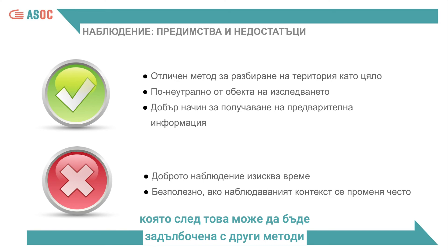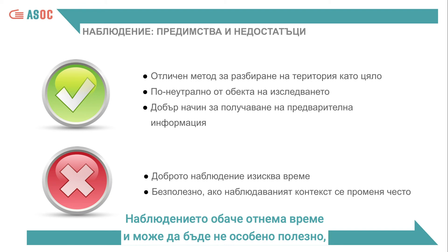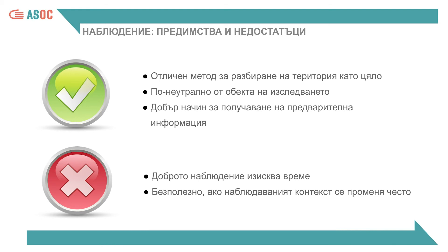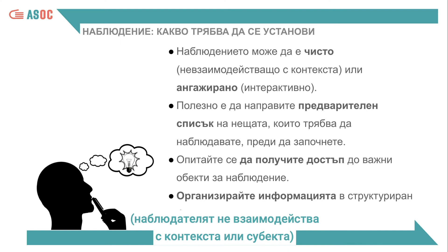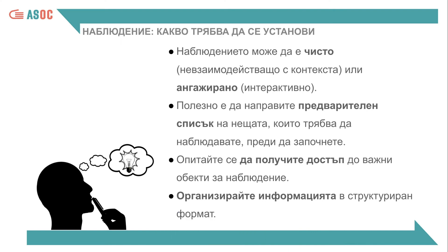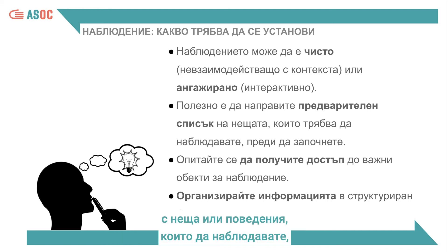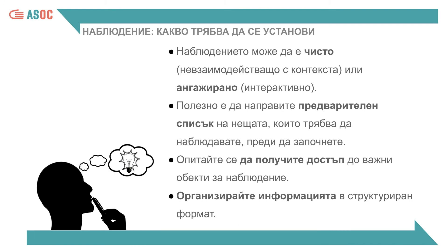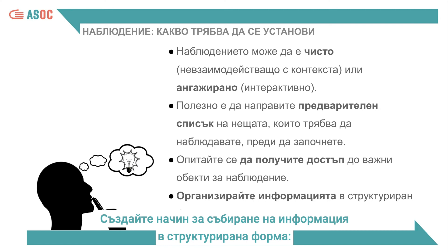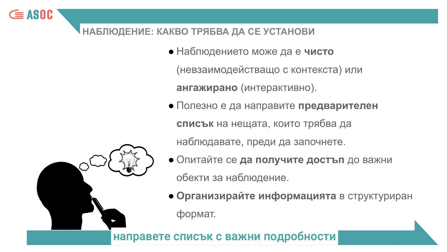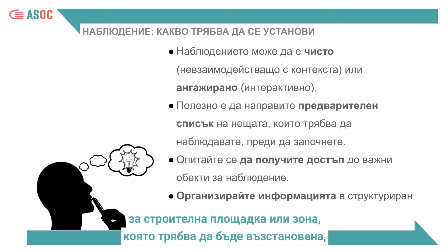Moreover, different preliminary information is obtained by observation, which can then be looked at in more depth with other methods such as interviews. However, observation takes time and may be of little use if the context in question changes often. Observation can be pure — the observer does not interact with the context or subject — or engaged, where the observer interacts with the subjects for a better understanding. It is always useful to make a list of things or behaviors to observe before going to the area of study, and to create a structured way to collect the information — for example, counting how many people use a certain service at a certain time, or creating a list of relevant details about a work site or remediation site.